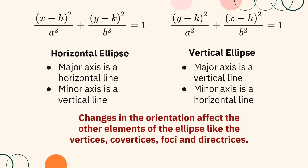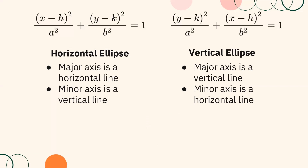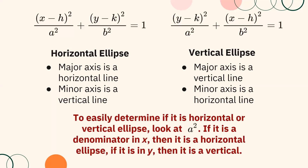Changes in the orientation affect the other elements of the ellipse like the vertices, co-vertices, foci, and directrices. Also, to easily determine if it is a horizontal or a vertical ellipse, look at the value of A squared. If it is a denominator in X, then it is a horizontal ellipse. If it is in Y, then it is vertical.